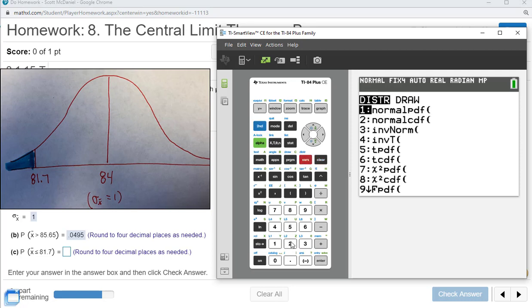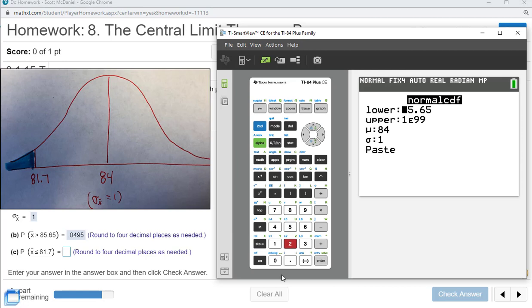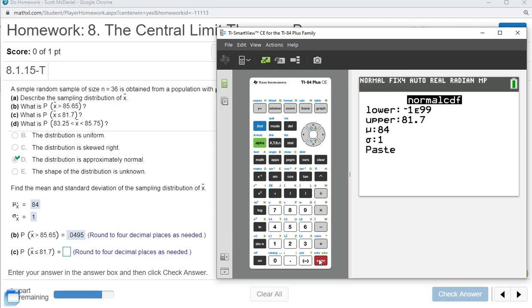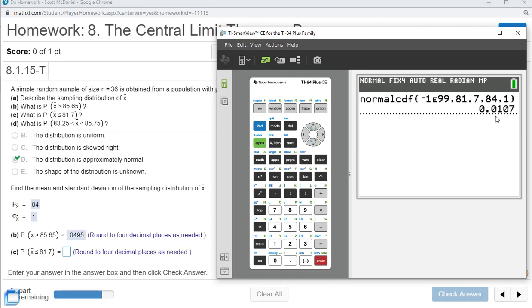Second distribution, number two. This time our lower is negative infinity, so negative 1 E99. The upper bound, we're going to stop at 81.7. The same mean and standard deviation. And we should draw this out too, as you see here. We get 0.0107.